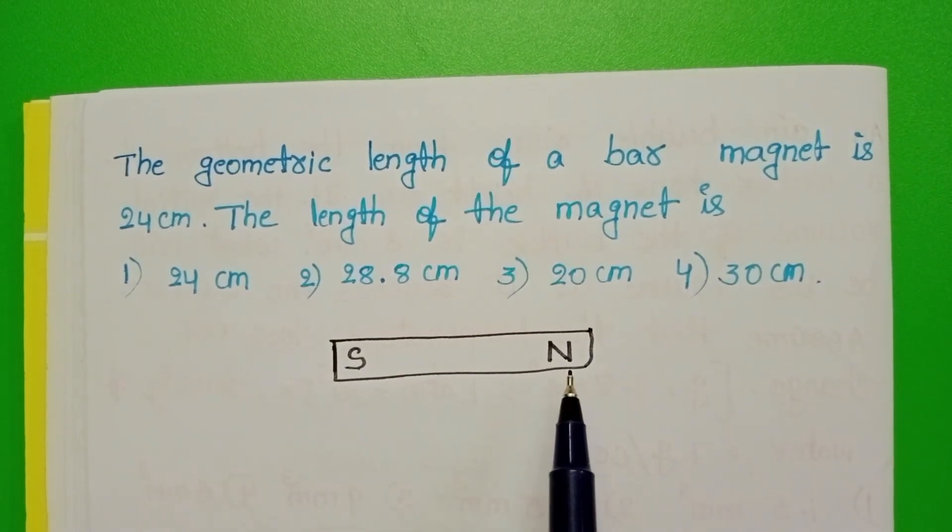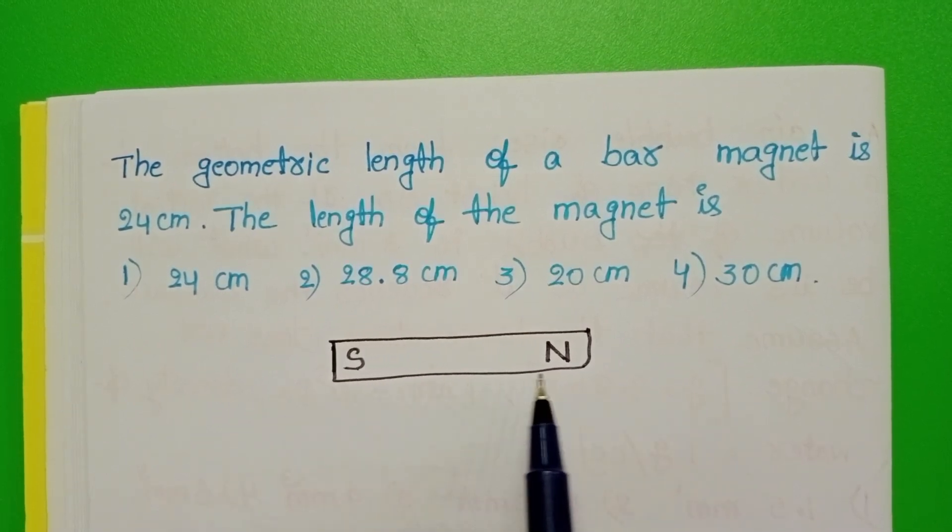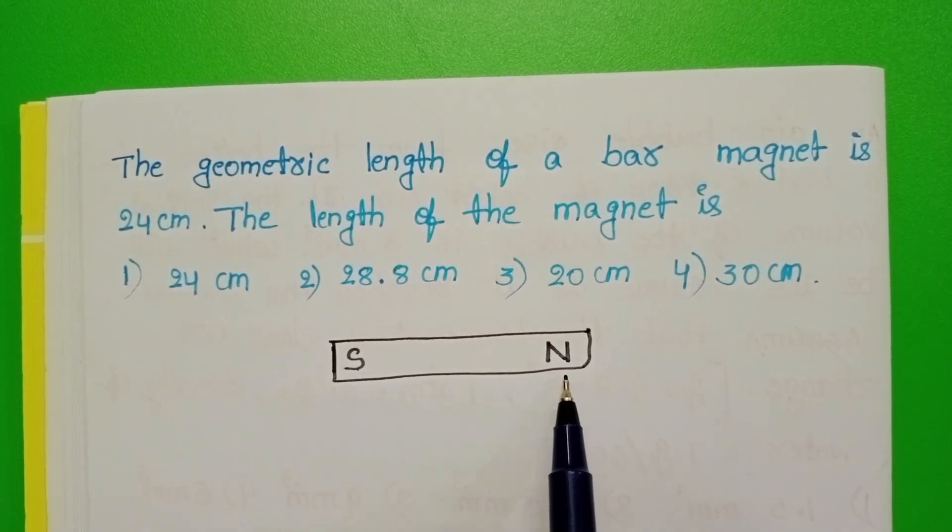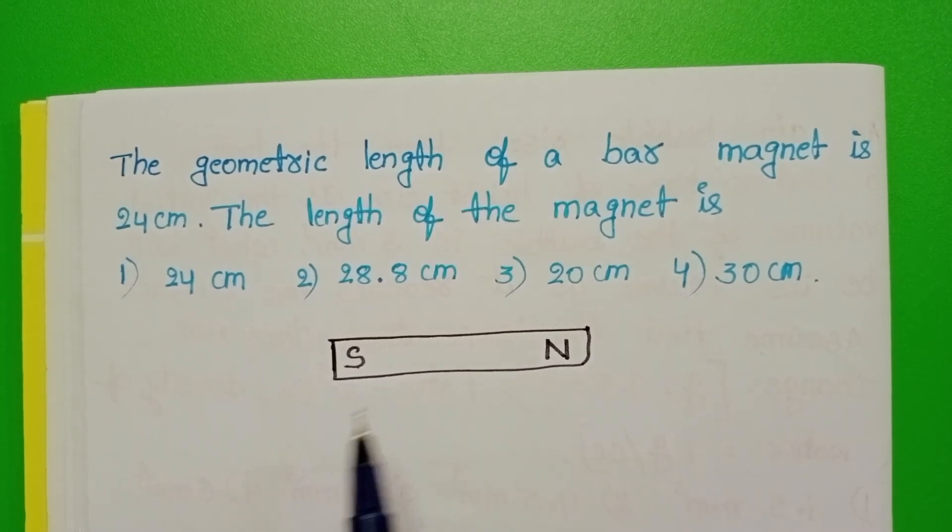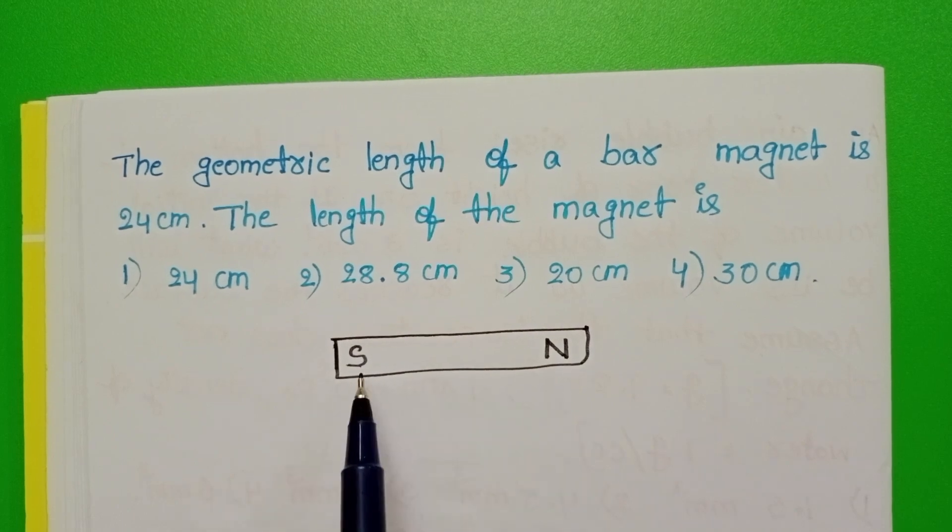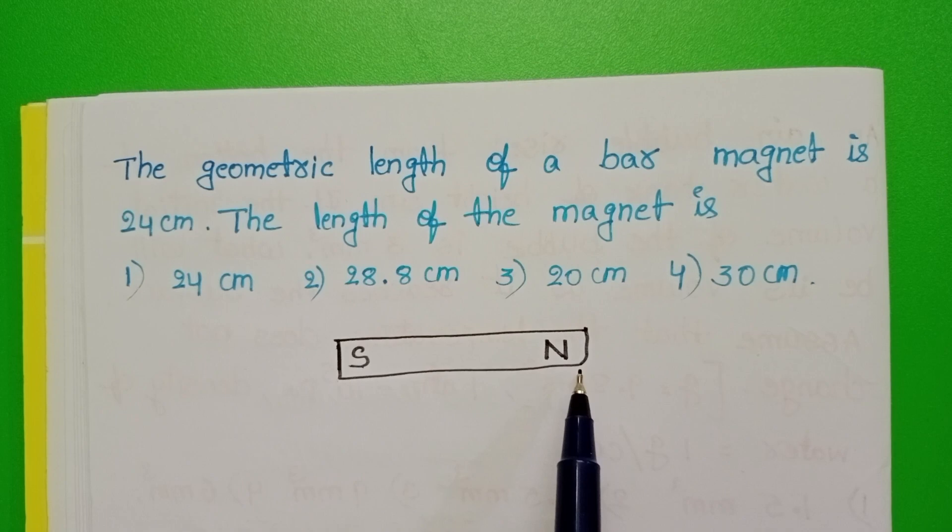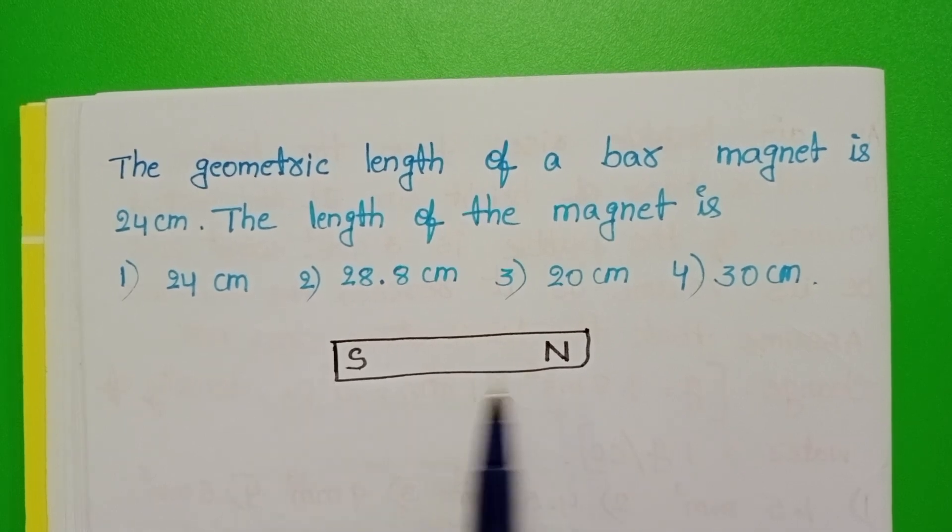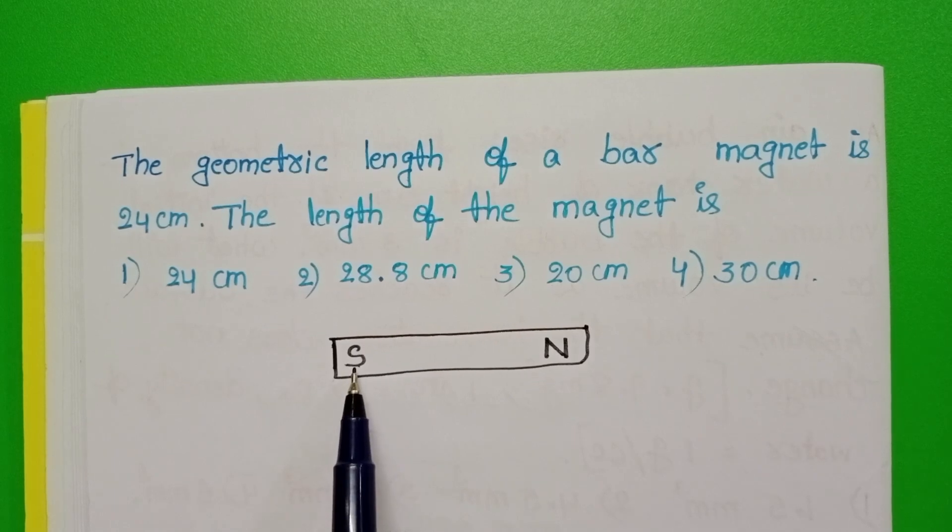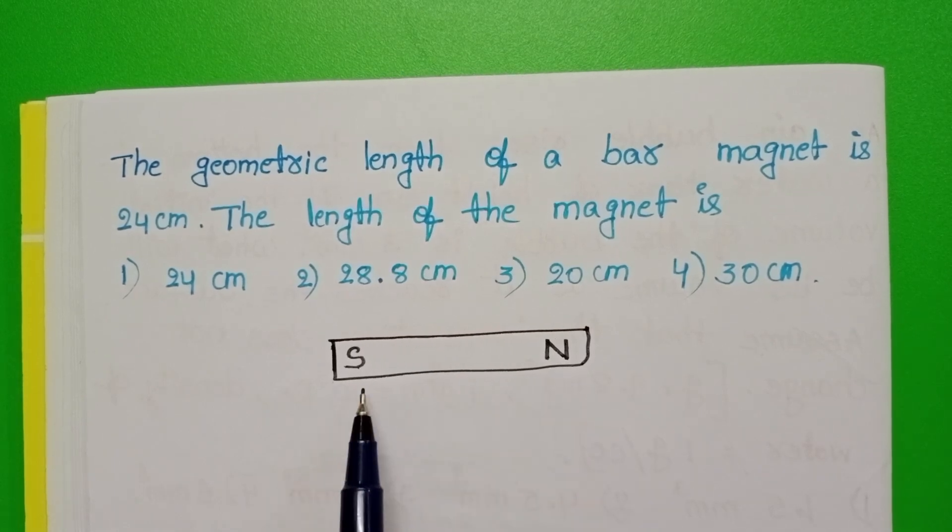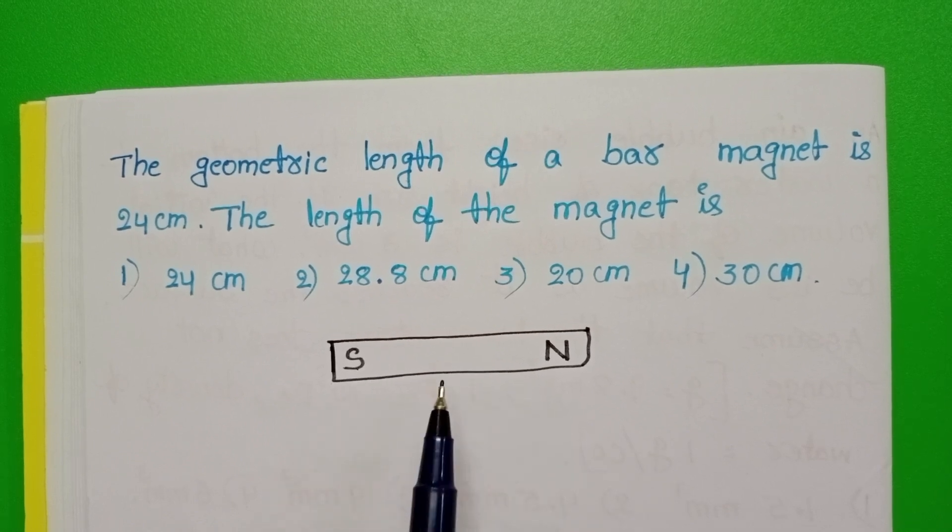This is a bar magnet, south pole and north pole. The actual length of the bar magnet is not equal to its magnetic length. Why? Because these two poles are not exactly at the edges of the bar magnet. So the actual length of the magnet is called geometric length, and the distance in between south pole and north pole is called magnetic length of the bar magnet.